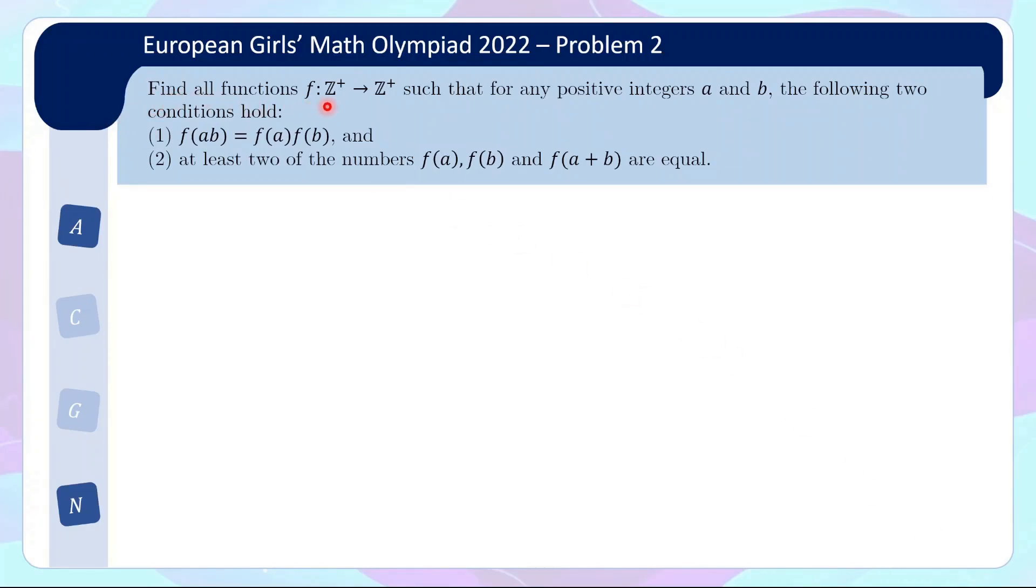So let's take a look at the problem. Find all functions f from positive integers to positive integers such that for any positive integers a and b, the following two conditions hold. First, f(ab) equals f(a) times f(b). This is commonly known as the multiplicative property. Second, at least two of the numbers f(a), f(b), and f(a+b) are equal.